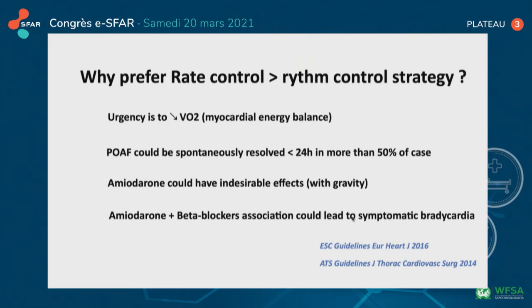Why prefer rate control over rhythm control in this strategy? Because the urgency is to decrease heart rate for the myocardial energy balance. Atrial fibrillation could resolve spontaneously in more than half of cases. Additionally, amiodarone could have undesirable effects and could lead to symptomatic bradycardia when beta-blockers are simultaneously used.